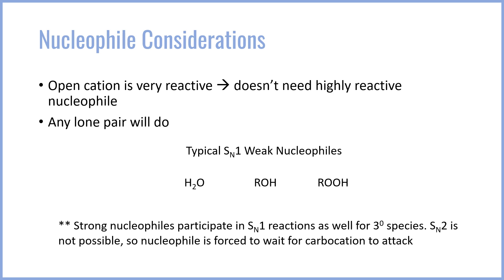However, in the case of a strong nucleophile, if it's able to attack quickly — i.e., in a secondary or primary species — it will do so immediately without needing to wait for the cation to form. So strong nucleophiles with tertiary species will go through SN1, but for smaller species will go through SN2 typically. Weak nucleophiles must always go through SN1 because they're not strong enough to do the SN2 reaction.